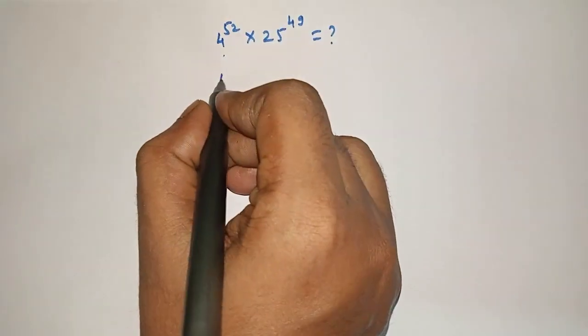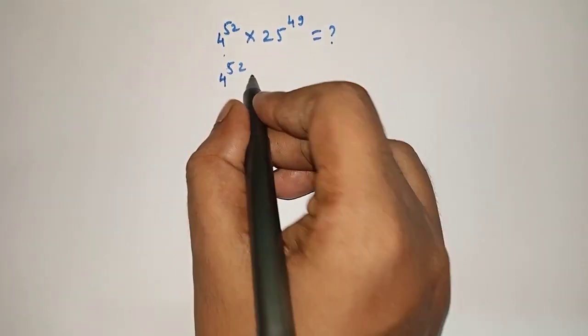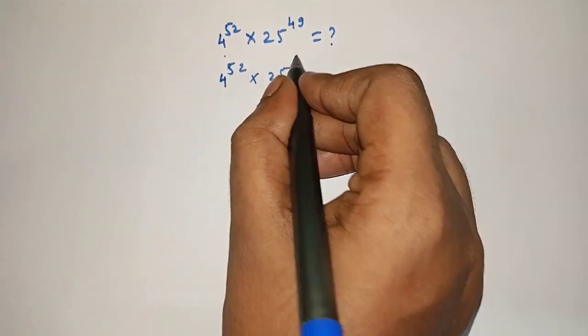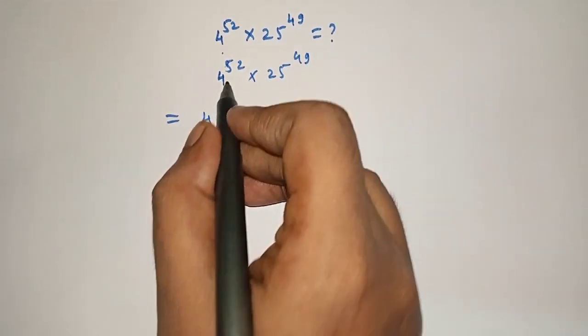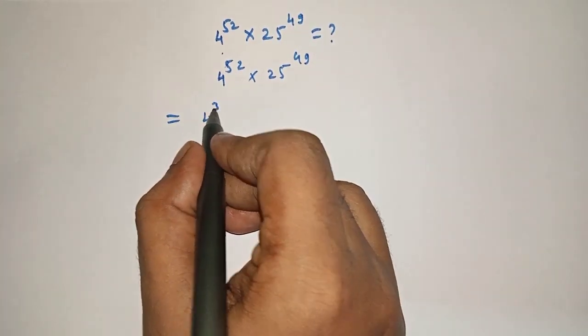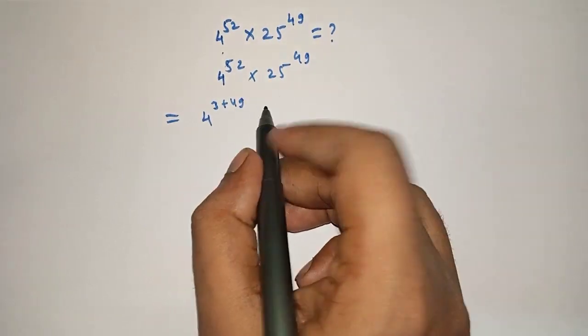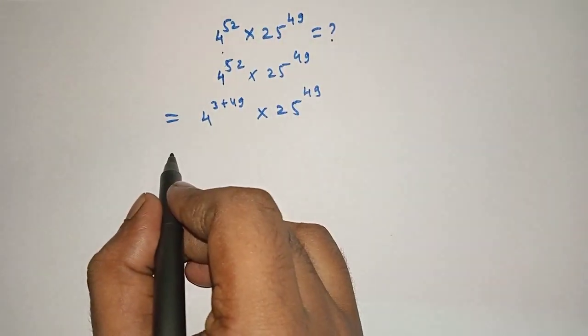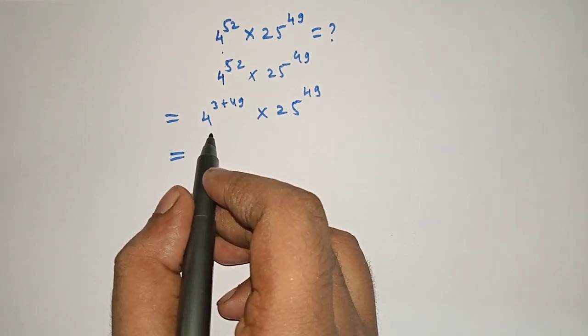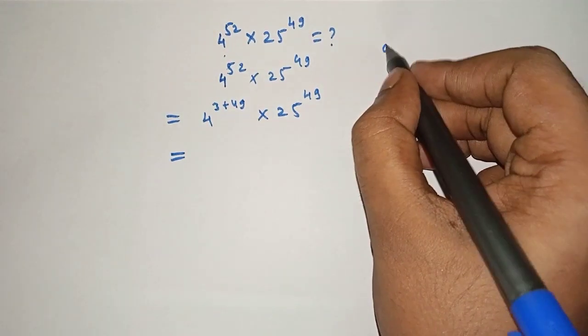4 raised to 52 times 25 raised to 49 is equal to 4 raised to 52 can be written as 3 plus 49 times 25 raised to 49.